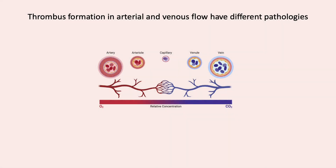Blood flow dynamics and the structure of arteries and veins are different. Therefore, it is not surprising that thrombus formation in the arteries and veins have different characteristics in terms of mechanism of development, their predisposing causes, the thrombus composition, and their clinical consequences.